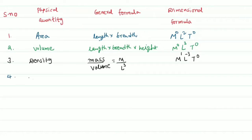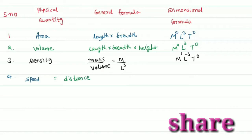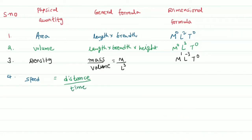Next are speed and velocity. Speed is a scalar physical quantity. Speed equals distance per time. Distance corresponds to length (L power 1) and time is T. So the dimensional formula for speed is M power 0, L power 1, T power minus 1.